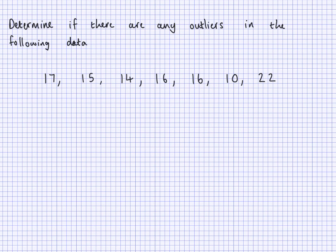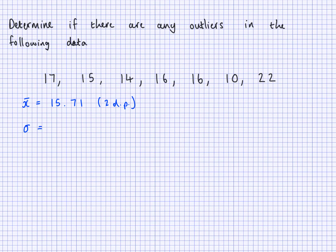There is another calculation we could use to determine if we have outliers. That one uses the mean and standard deviation. I've found that the mean is 15.71 to two decimal places, and the standard deviation is 3.33, also to two decimal places.